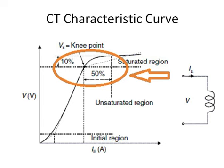That saturation point is the knee point voltage. As per IEC, the knee point voltage is defined as: the applied voltage across the CT where, if this voltage is increased by 10% and the excitation current increases by 50%, then this point is defined as the knee point voltage. Up to this point the CT will operate properly; after that it will get saturated.